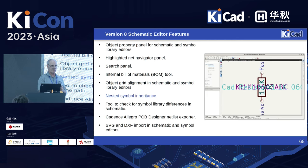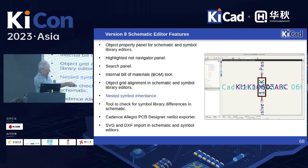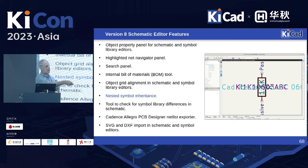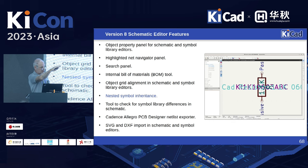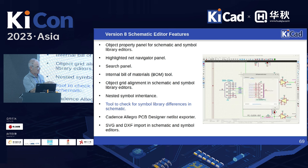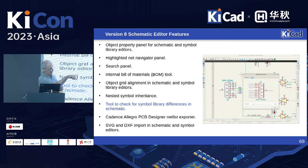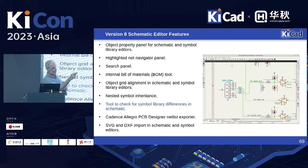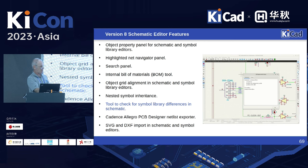We now support nested inheritance. In version 6 we introduced inheritance but it was only one level deep — you could only inherit from a root schematic. Now you can inherit as deep as you'd like. This is handy if you do atomic libraries and want to go all the way down to the part number level. There's also now a symbol diff tool: instead of just an ERC warning, you can actually see the graphical differences between the library symbol and what's in your schematic.